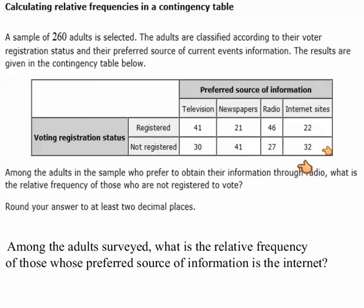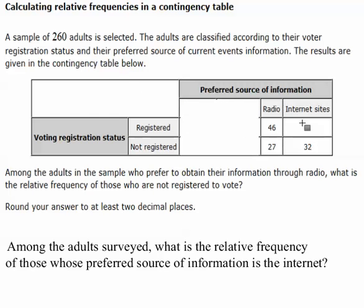Let's take a look at what they're asking us to do. Among the adults in the sample who preferred to obtain their information through radio, what is the relative frequency of those who are not registered voters? So we're looking at the people who chose radio — we don't need anything with television, newspaper, or internet sites. We're strictly looking at the group of people who prefer radio as their source of information.